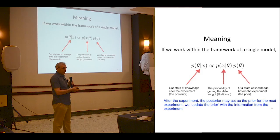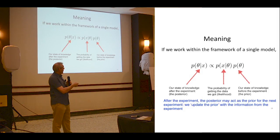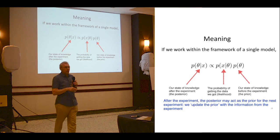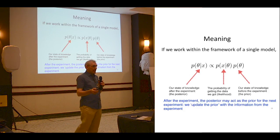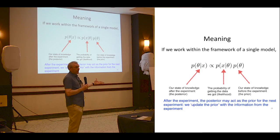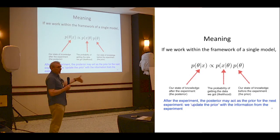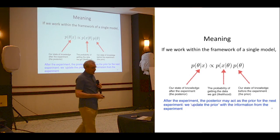We hope that we've learned something from the experiment. We started with some state of knowledge p(theta), did the experiment, calculated the likelihood, multiplied these together, and that gives the probability of the parameters given the data. Hopefully this posterior is a narrower distribution than what you started with. What the experiment allows you to do is to update your prior — you have some prior knowledge, do an experiment, learn a bit more. You can then use your posterior as a prior for the next experiment, giving your state of knowledge before the next one.